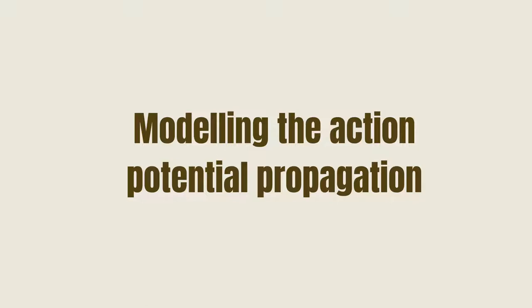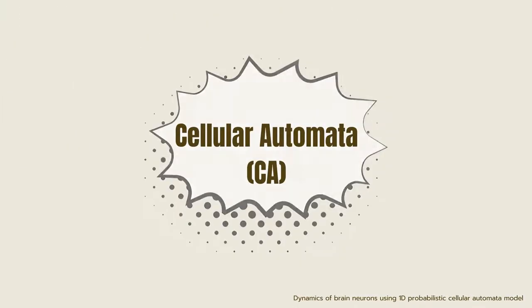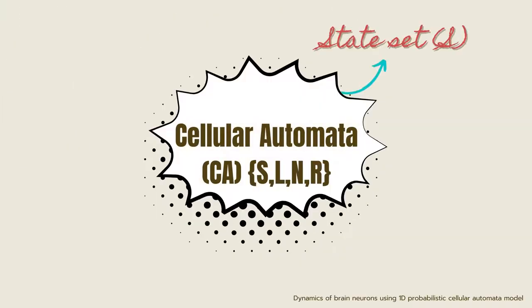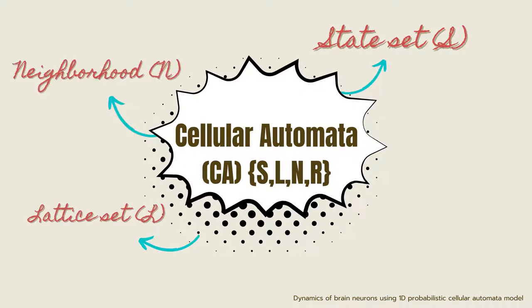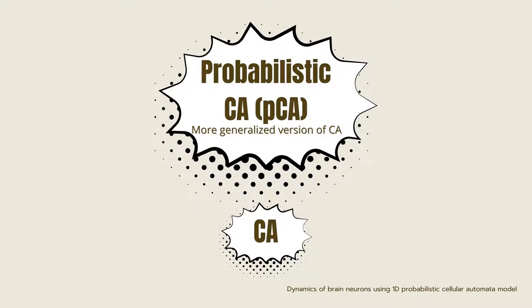One simple way of doing this is by using cellular automata, which is based on a state set for a finite lattice on a defined neighborhood, iterating from a set of rules. Here we're using a more general version which applies some randomness, called the probabilistic cellular automata or PCA.